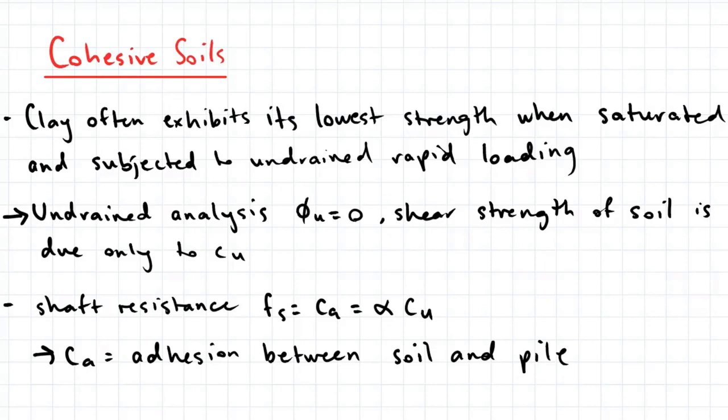Let's now talk about the ultimate axial capacity in cohesive soils. Clay often exhibits its lowest strength when saturated and subjected to undrained rapid loading. Hence we use an undrained analysis where phi u is equal to zero and the shear strength of the soil is due only to the undrained cohesion, Cu.